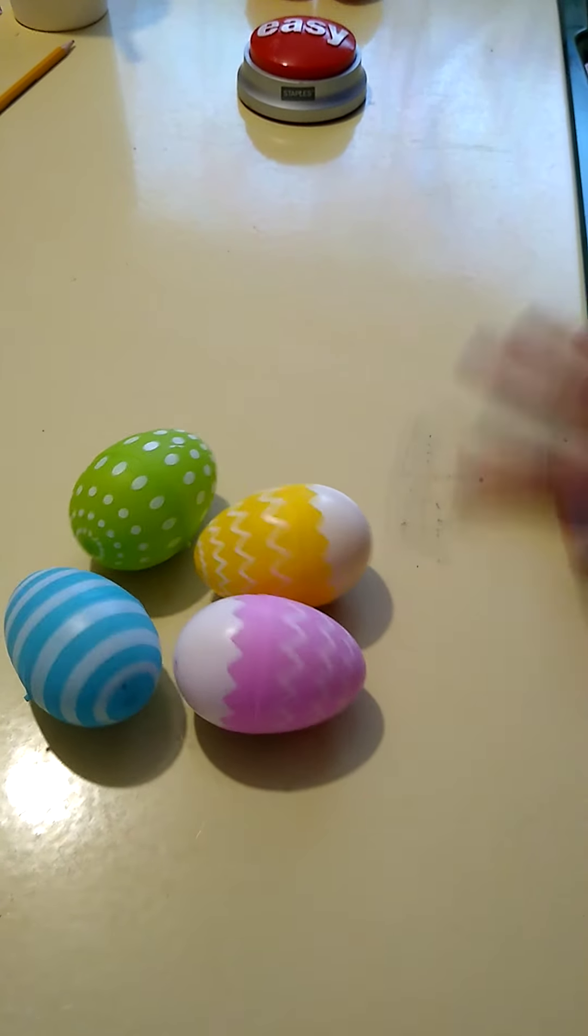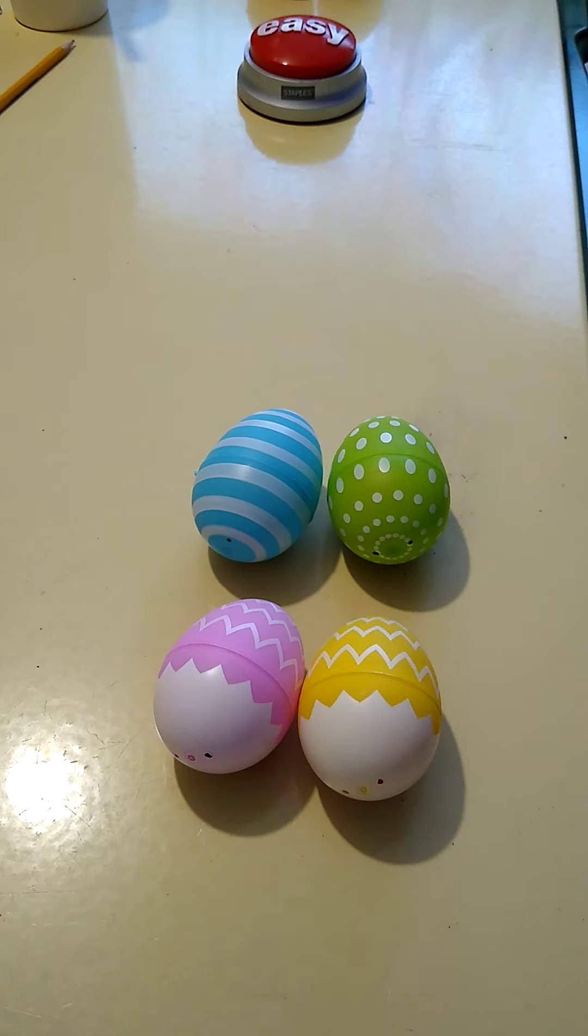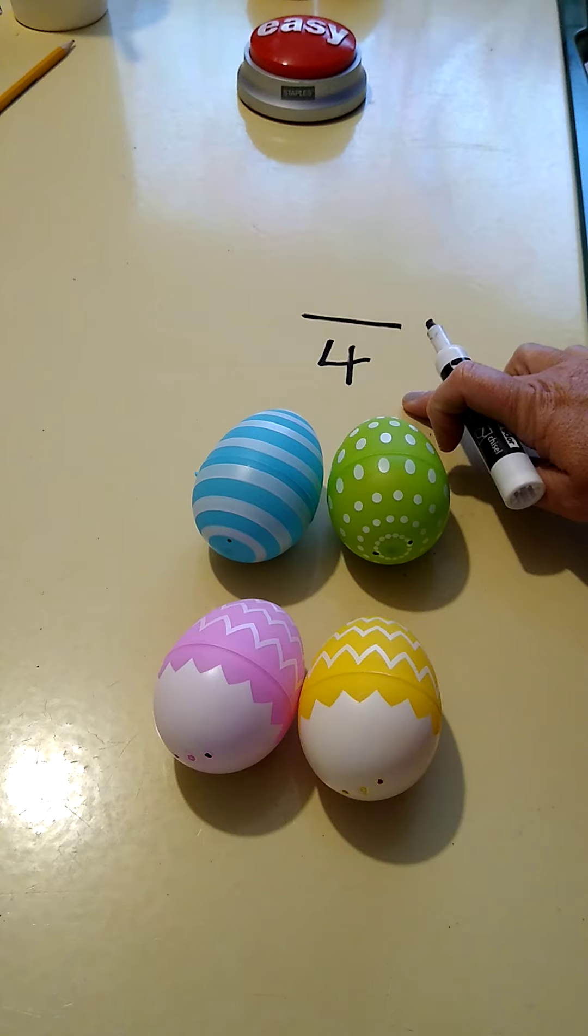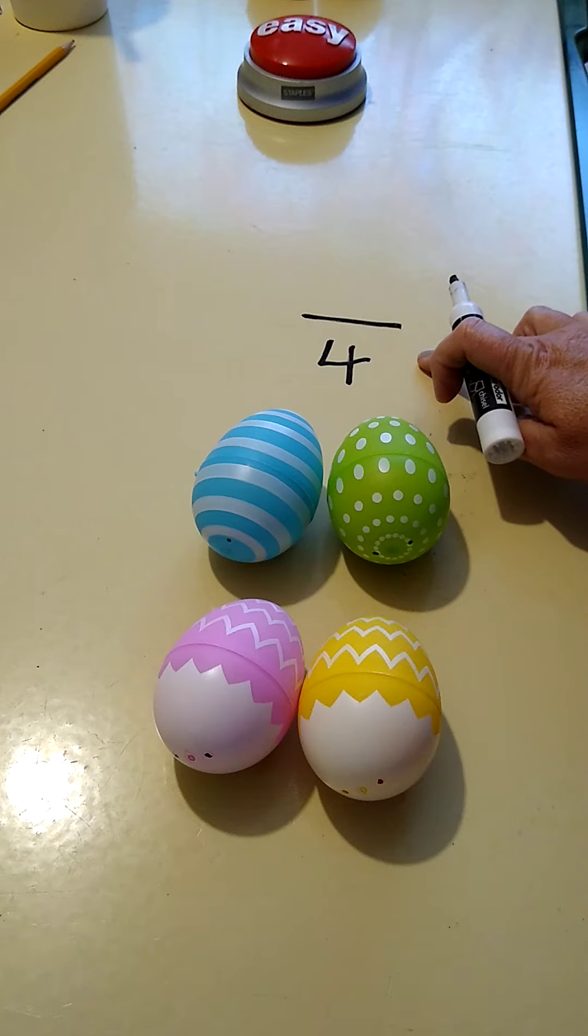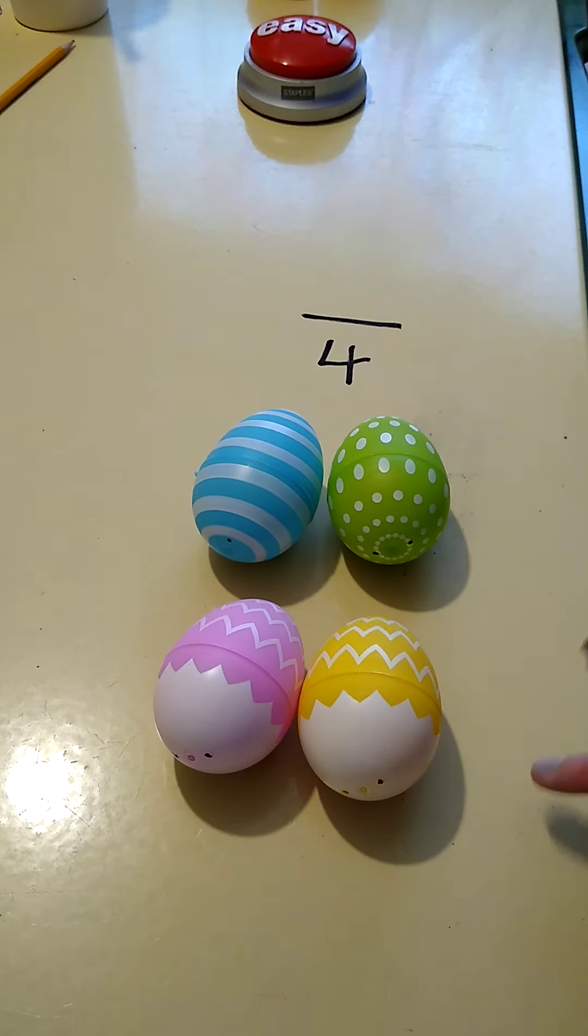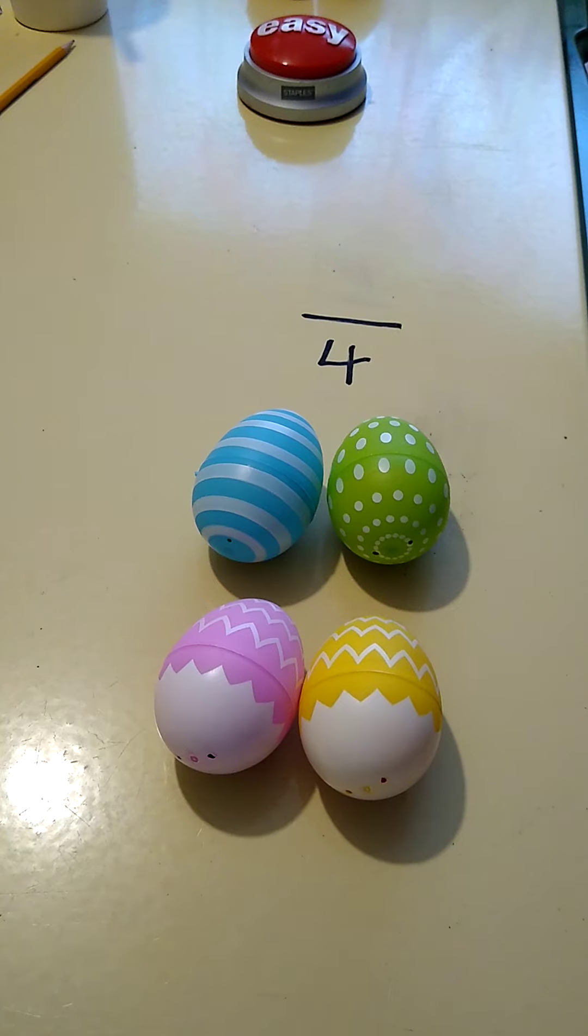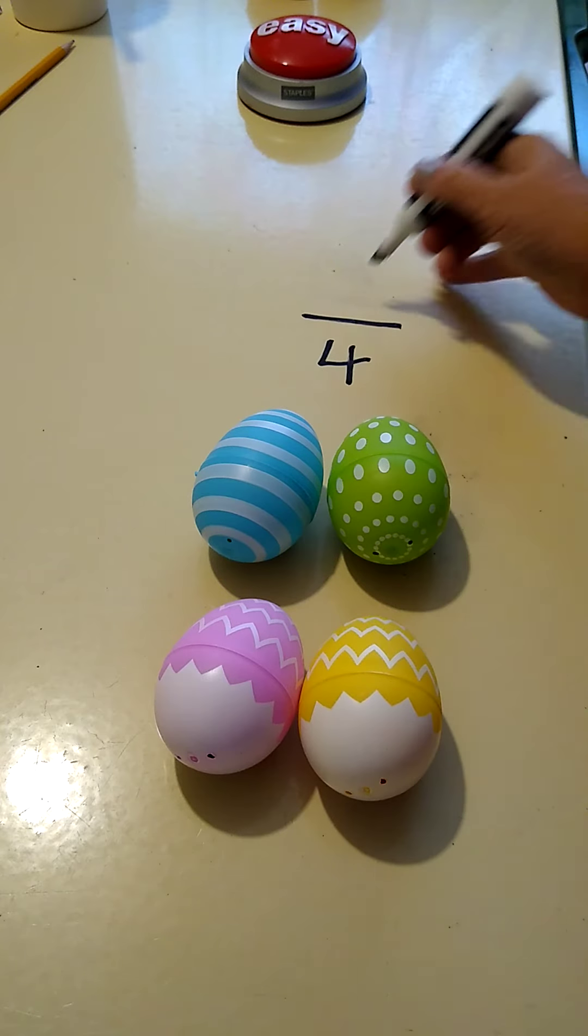So again, I have four eggs all together. That four is the bottom number, that is my denominator. That four shows my whole. How many out of my whole have this zigzag pattern? Two out of that four have the zigzag pattern. How many out of my whole have polka dots? One out of four, or one-fourth, has polka dots.